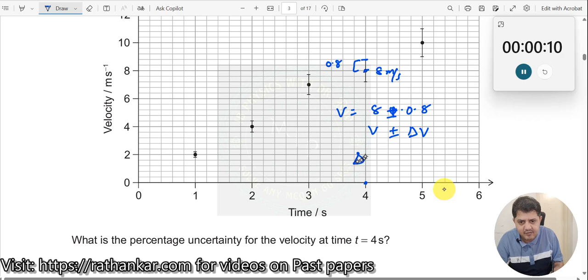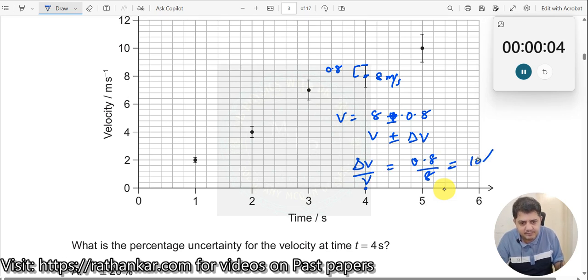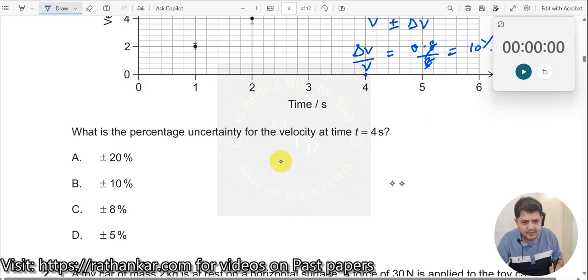So, percentage uncertainty would be delta v by v which is 0.8 divided by 8 which is equal to 10 percent. 10 percent because this becomes 0.1, 10 percent over here. So, thus the answer should be 10 percent. So, b.